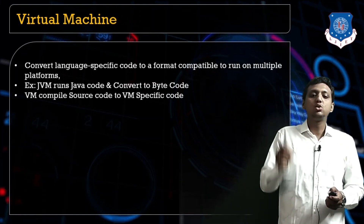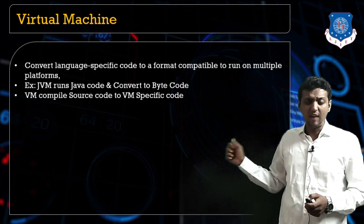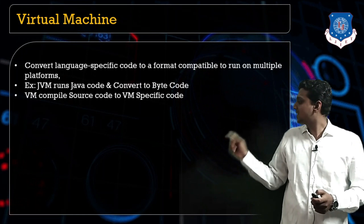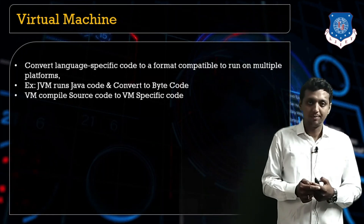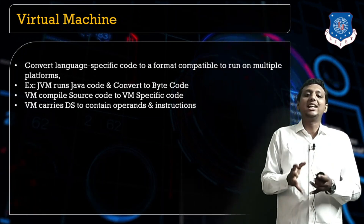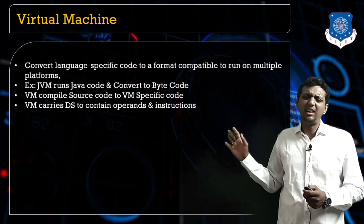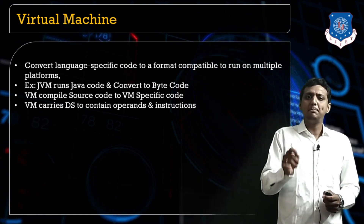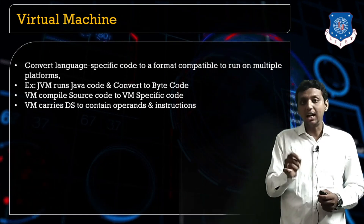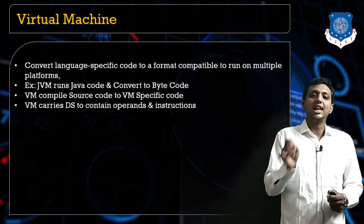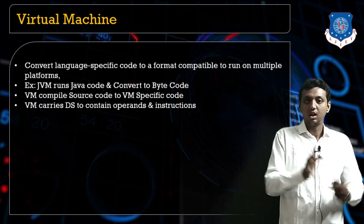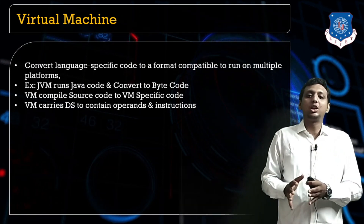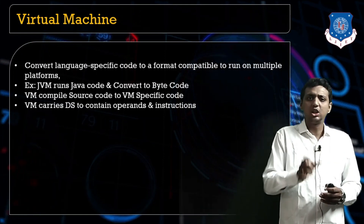The virtual machine is used to compile the source code and convert it into virtual machine-specific code. The virtual machine carries data structures that contain operands and instructions. If you remember data structures, particularly the evaluation of post-fix expressions using a stack — remember that process? If I want to execute 3 plus 5, how does the stack execute it?